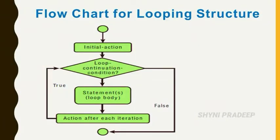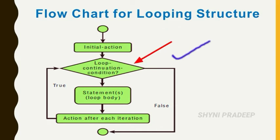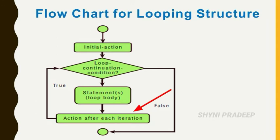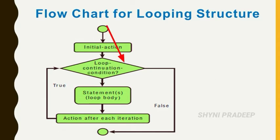Now let's see the flowchart for looping structure. It has four steps: first, initialization; second, loop condition; third, statements; fourth, increment or decrement. First you initialize the variable, then check the condition. If true, execute the block of statements and update the value of the variable, then go back to check the condition again. When the condition becomes false, exit the loop.